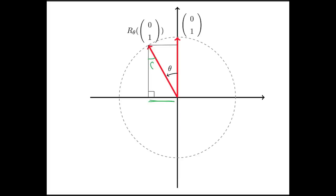We know that this is also theta. We know, therefore, that this is sine of theta, and we know that this is cosine of theta. So, r sub theta of the second unit basis vector is minus sine theta, cosine theta.